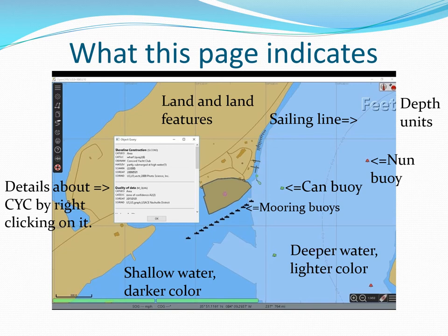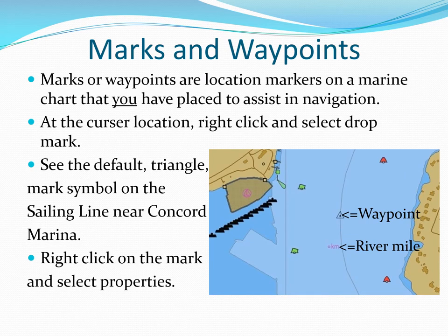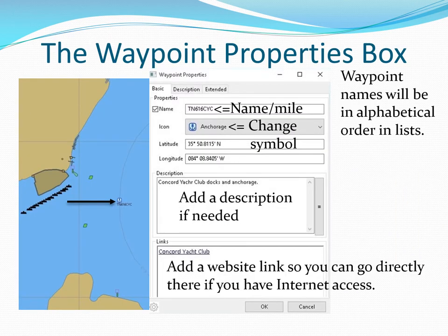There are many layers of helpful data on ENC charts that can be displayed when needed. Marks or waypoints are location markers on a marine chart that you have placed to assist you in navigation. At the cursor location, right click and select drop mark. See the default triangle mark symbol on the sailing line near Concord marina. Right click on the mark and select properties. You should use a waypoint naming sequence that makes sense for your area. We suggest river abbreviation, river mile, and then a descriptor abbreviation.